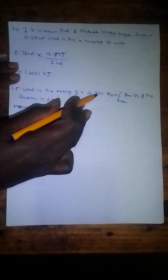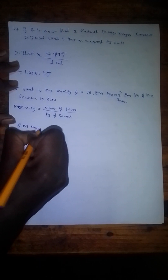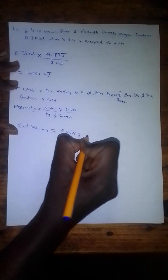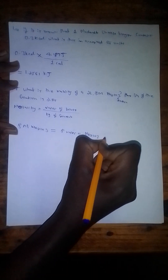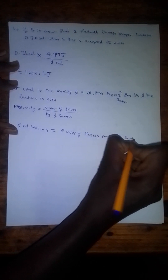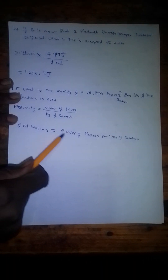The solution is 2-liter 8-molar Na₂CO₃. An 8-molar solution means 8 moles of Na₂CO₃ per liter of solution. Since we have 2 liters, there are 16 moles of Na₂CO₃ in total. The solute is Na₂CO₃ since that is what has been dissolved.